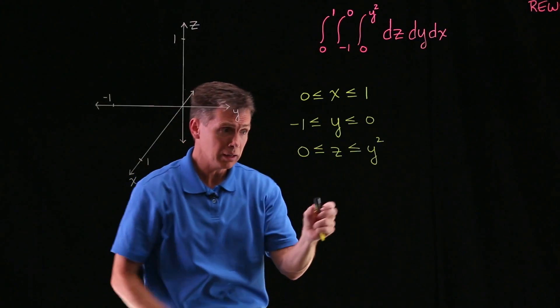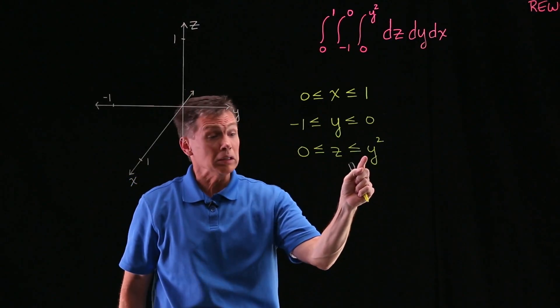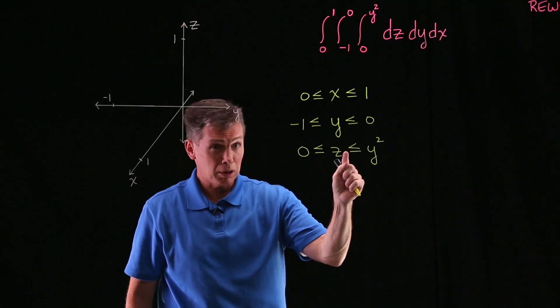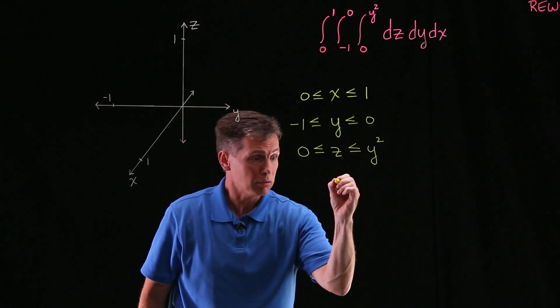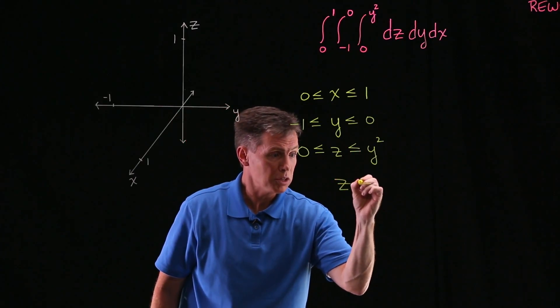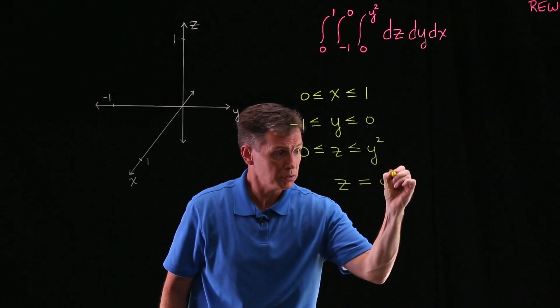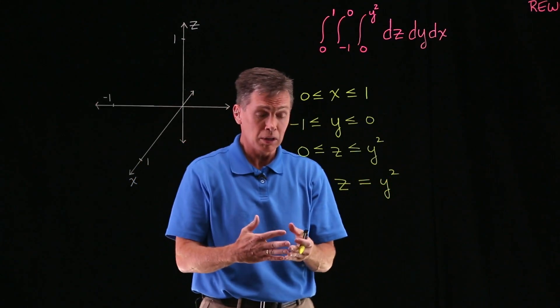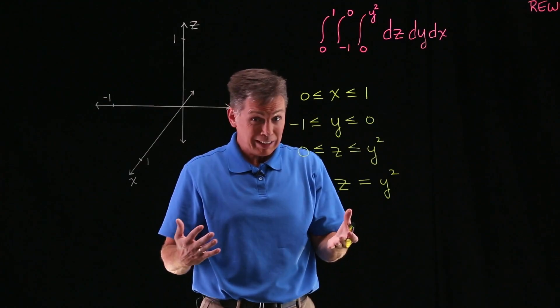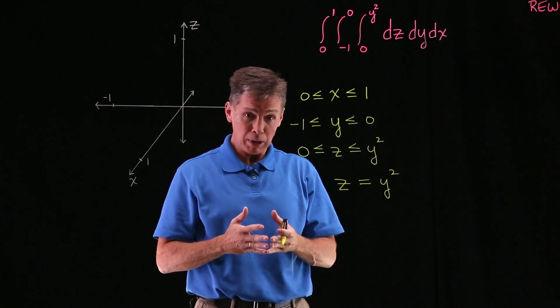In order to see that, let's actually take that or equal to part of the inequality and write that as an equation. So in order to see this upper bound, I'm going to write that as an equation. And now, actually, I see it already in this case. That's a parabola.